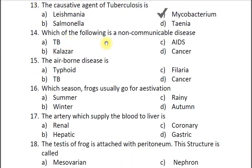Question fourteen: Which of the following is a non-communicable disease? A TB, B kala azar, C AIDS, D cancer. The correct answer is D cancer. TB is caused by inhalation of Mycobacterium bacteria. Kala azar is caused by a protozoan. AIDS is caused by the retrovirus HIV. Cancer is not usually caused by a microorganism, so it is non-communicable, though oncogenic viruses can also cause cancer.